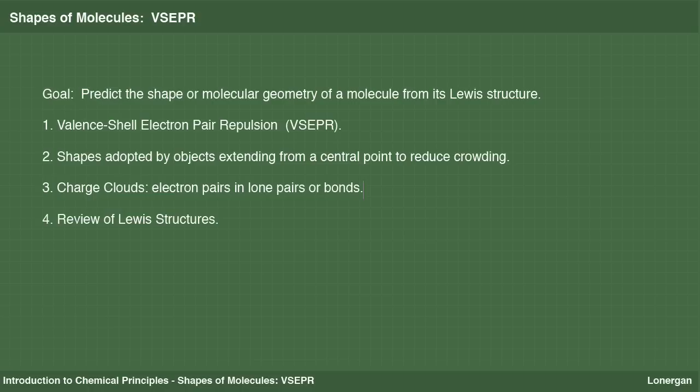To do this, I will introduce you to valence-shell electron pair repulsion, or VSEPR theory, which is a simple theory for predicting the shape of the molecules making up covalent compounds. The first step will be to understand how objects extending from a single central point will arrange themselves to minimize the crowding between them. The specific objects we will care about are called charge clouds, representing the electron pairs in either bonds or lone pairs. The application of VSEPR is based on Lewis dot structures, so the examples I work will also provide a review for drawing these structures.